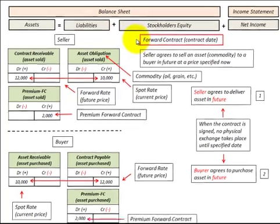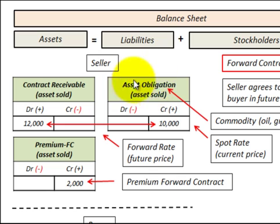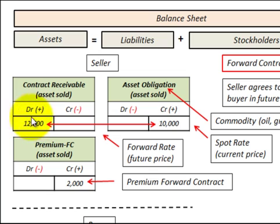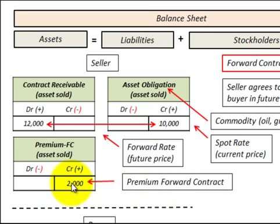To record this forward contract on the contract date from the seller's perspective, we create a liability here as an asset obligation for the commodity we're going to supply in the future. We credit it for the spot rate, or the current price of that commodity — $10,000. On the asset side, we have a contract receivable, which is what we're going to receive in the future, so we debit it for the forward rate — $12,000. We need a balancing amount since we sold it for $10,000 but will receive $12,000, so we set up a contra asset account and credit it $2,000 as the premium on this forward contract.